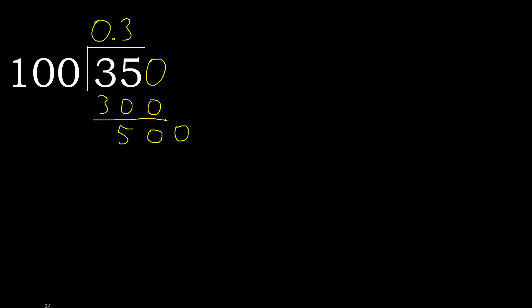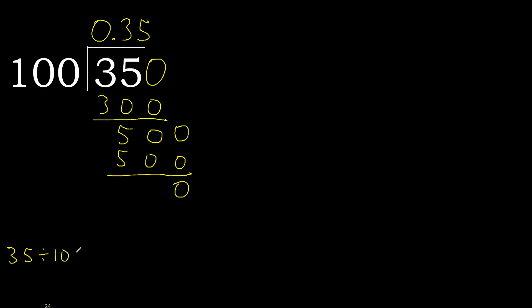500. 100 multiplied by 5 is 500, is not greater. Subtract. 0. Therefore finished. 35 divided by 100 is 0.35.